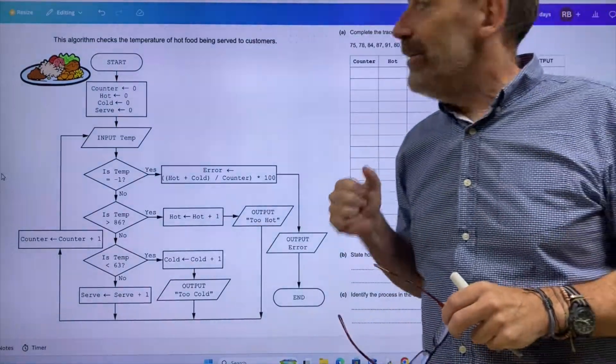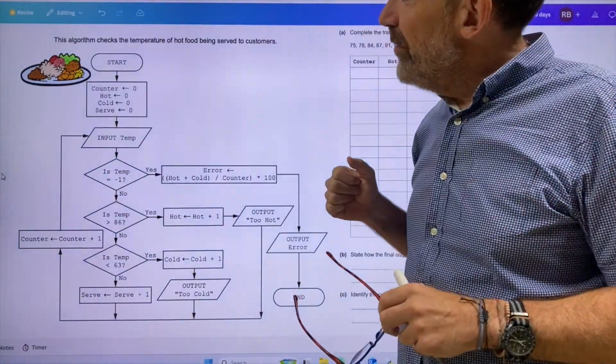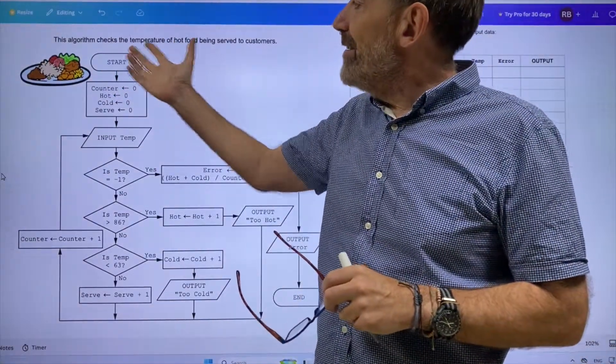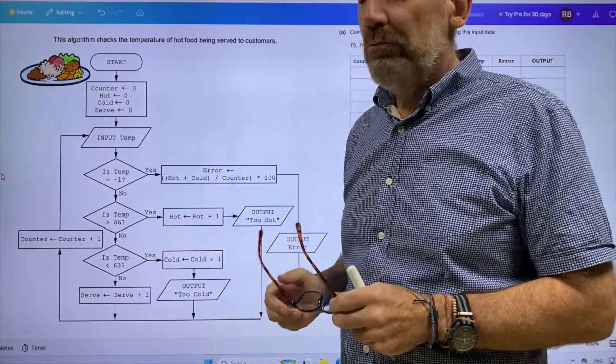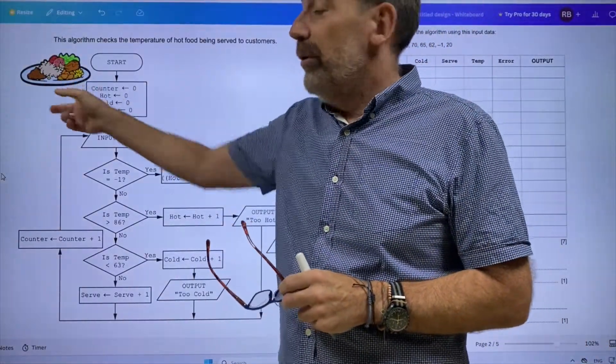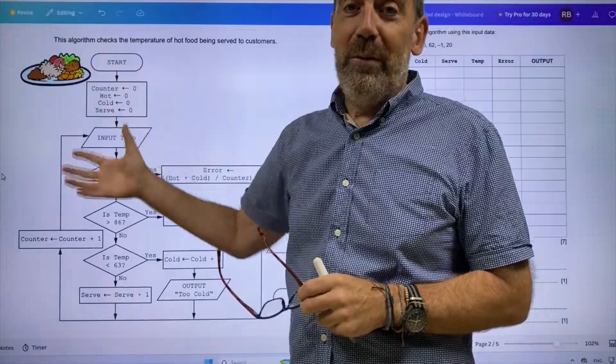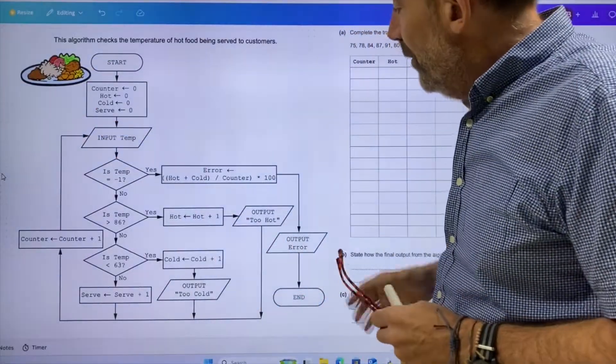Okay, we have yet another trace table here. This time, this algorithm checks the temperature of hot food being served to customers. You can see we're talking about food, so you've got a plate of food.